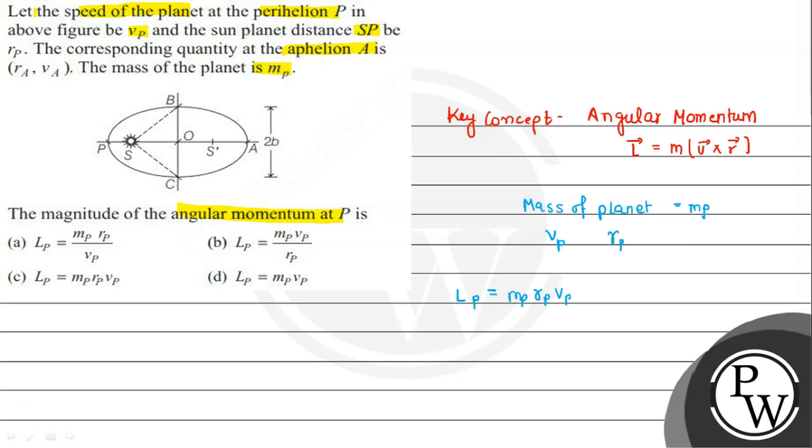We have here P values, because we have to find at point P. So option C is the final answer. Hope you understood well. Best of luck to you.